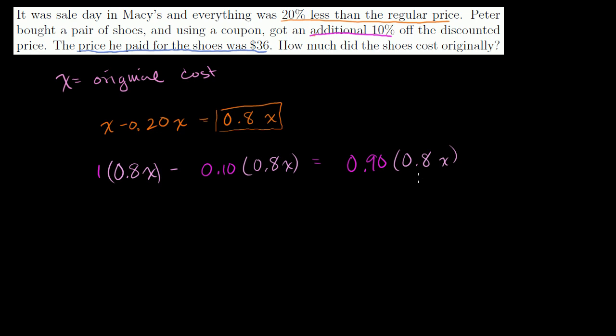And it might actually be very natural for you to go straight to this. It's natural for me. If I'm paying 20% less than the regular price, that means I'm going to pay 80% of the regular price. And then if I get an additional 10% off of that, that means I'm only going to pay 90% of that. So this is what he's going to pay. And they tell us that that price is $36. That price is equal to $36.